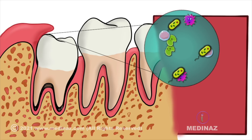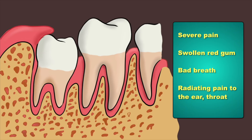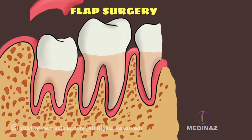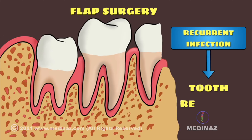You may experience severe pain, swollen red gums, bad breath, and sometimes the pain may radiate to the ear, throat, and floor of the mouth. Your dentist may recommend flap surgery in such a situation. But if this inflammation occurs again and again, then it is recommended to extract the offending wisdom tooth.